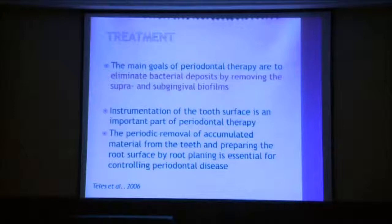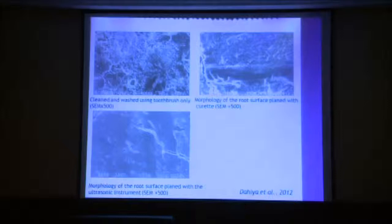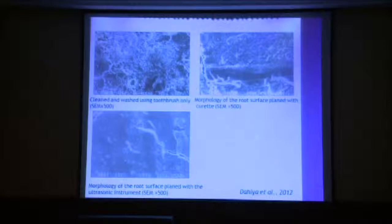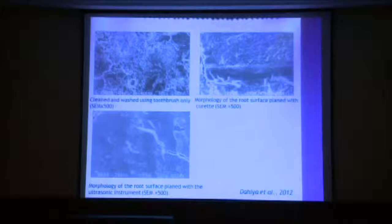The instrumentation of tooth surface is an important part of periodontal therapy. We can do that with hand instruments or ultrasonic devices. Here I am showing you three photographs made with an electron microscope: the first only after washing the tooth with a toothbrush, the second after scaling and root planning with hand instruments, and the third after ultrasonic scaling. It's clearly seen that after ultrasonic scaling you get a smoother and cleaner root surface.